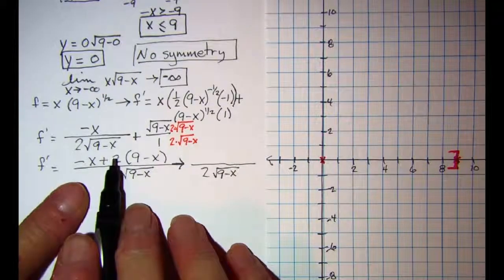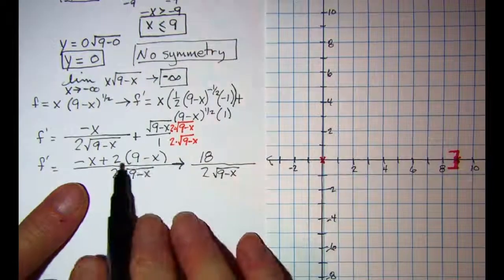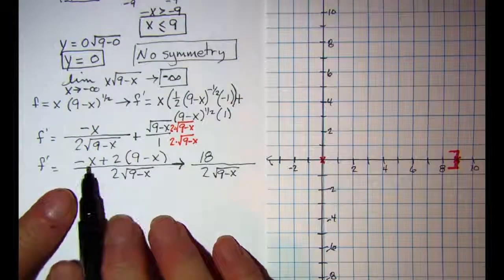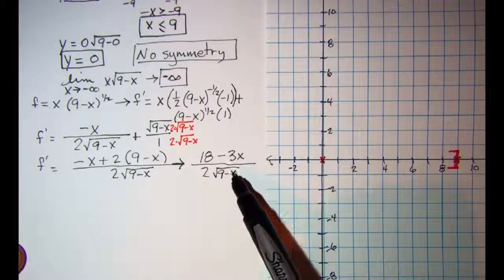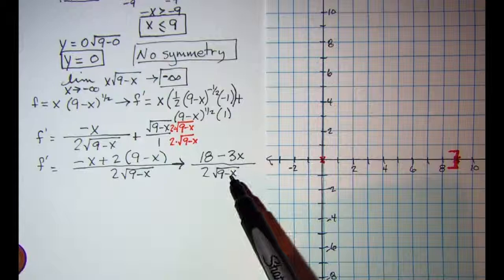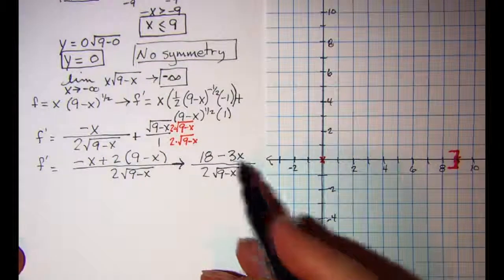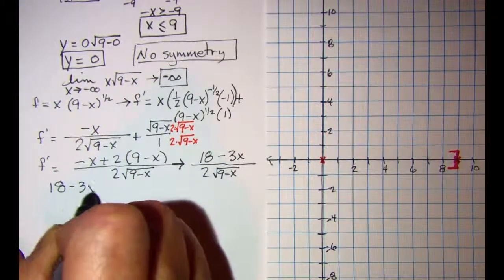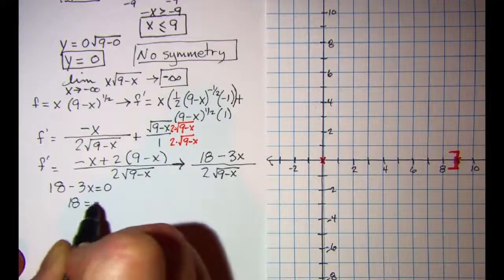Now this is 2 radical (9 minus x) in the denominator. I have an 18, and then when I distribute the 2 I have a negative 2x and a negative 1x. So this is undefined at x equals 9 and I have 18 minus 3x equals 0.